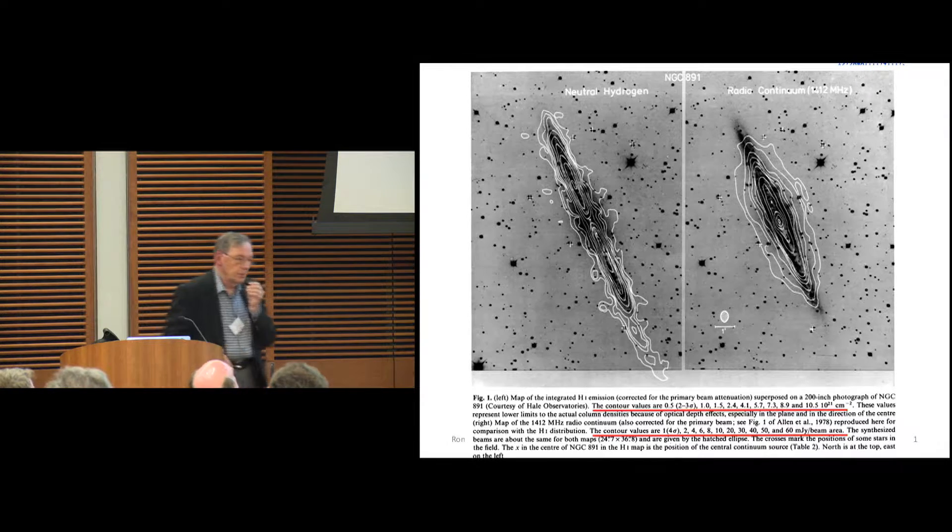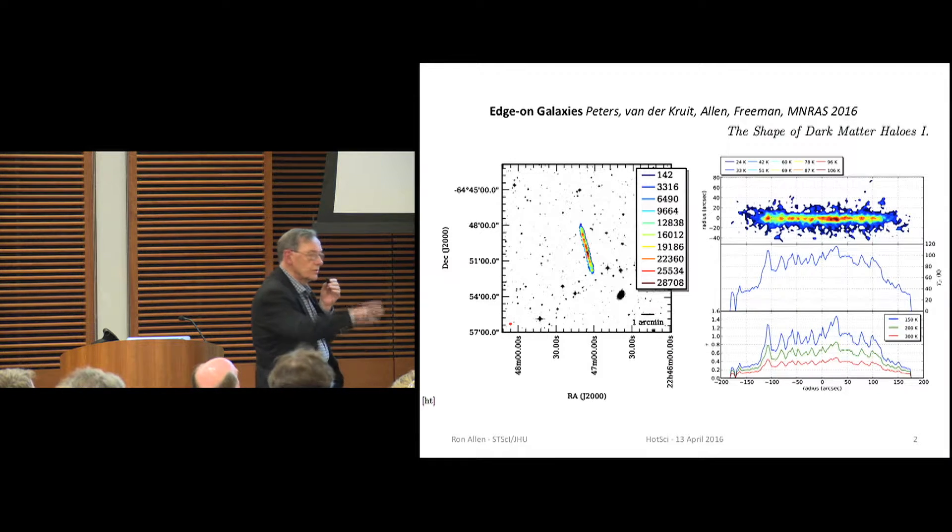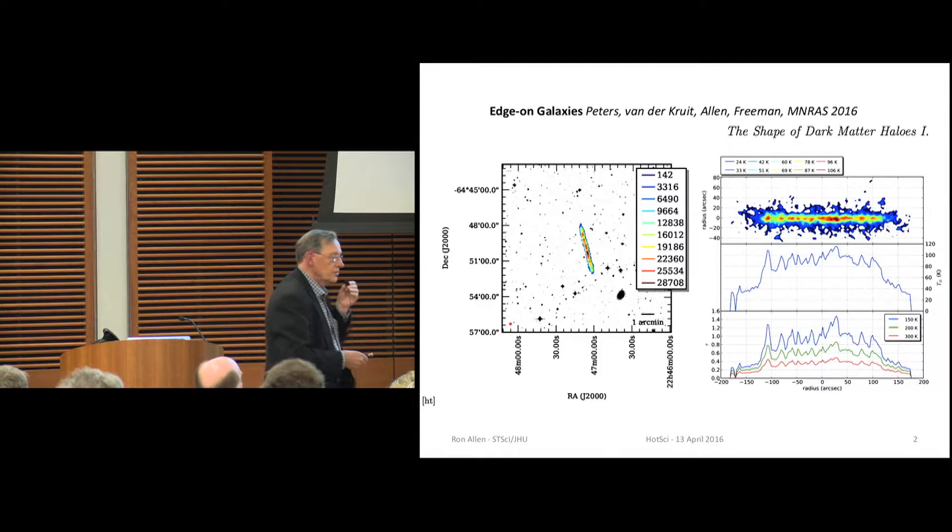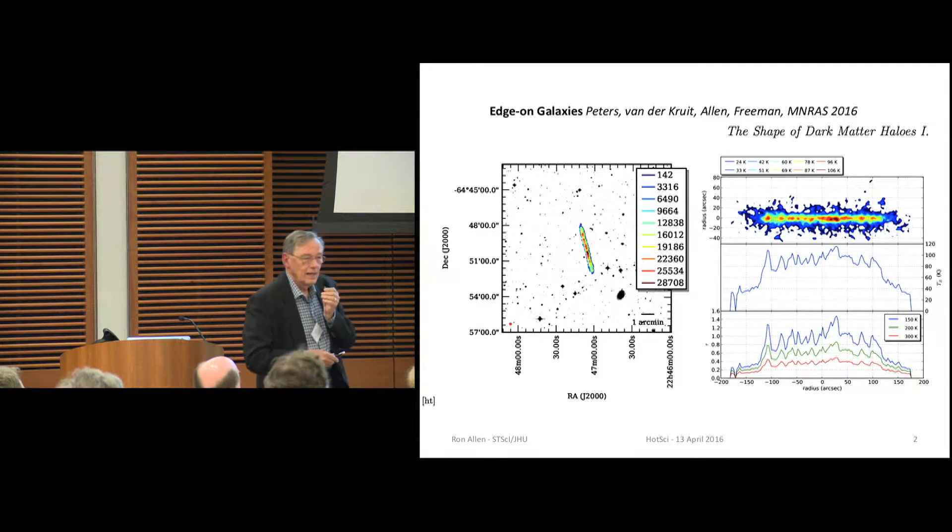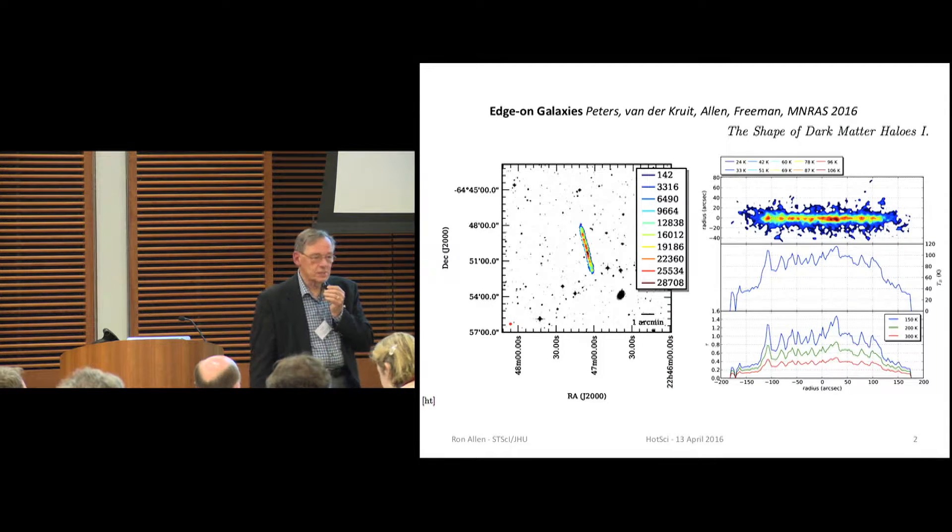This is a new paper coming out in Monthly Notices where a young student in Holland, Stefan Peters, has analyzed a handful, half a dozen, six to ten, edge-on galaxies in H1. And these are shown in their normal format, you might see. And over here, just sort of flattened to make it look a little bit neater. And he came to me first, and he said, why are these all flat? And I looked at the contour units. They were millijanskys per beam.